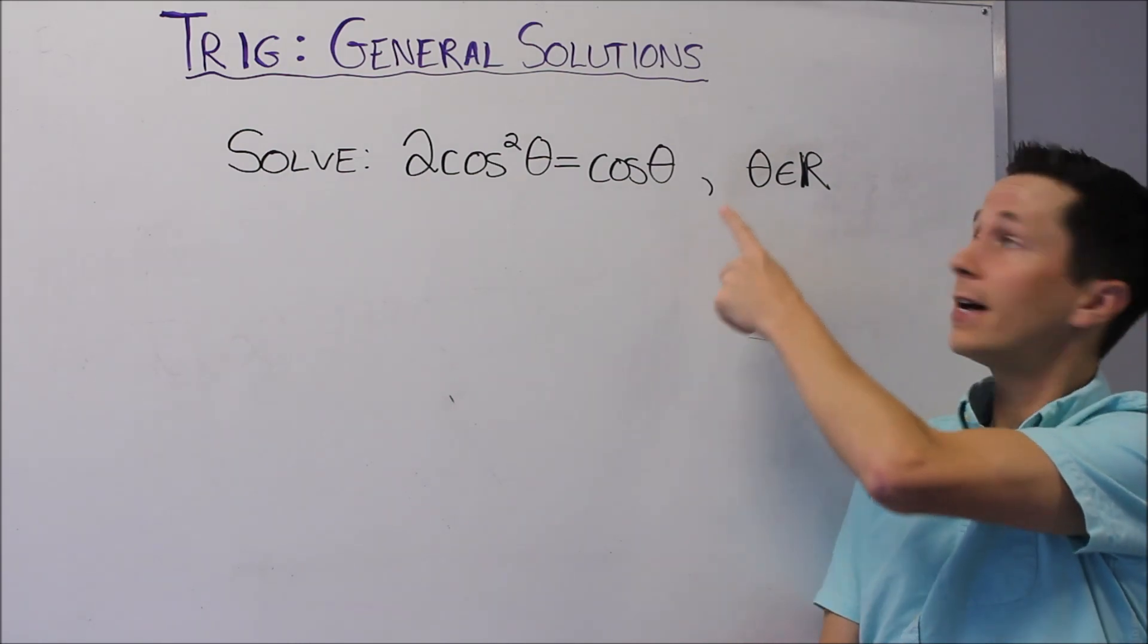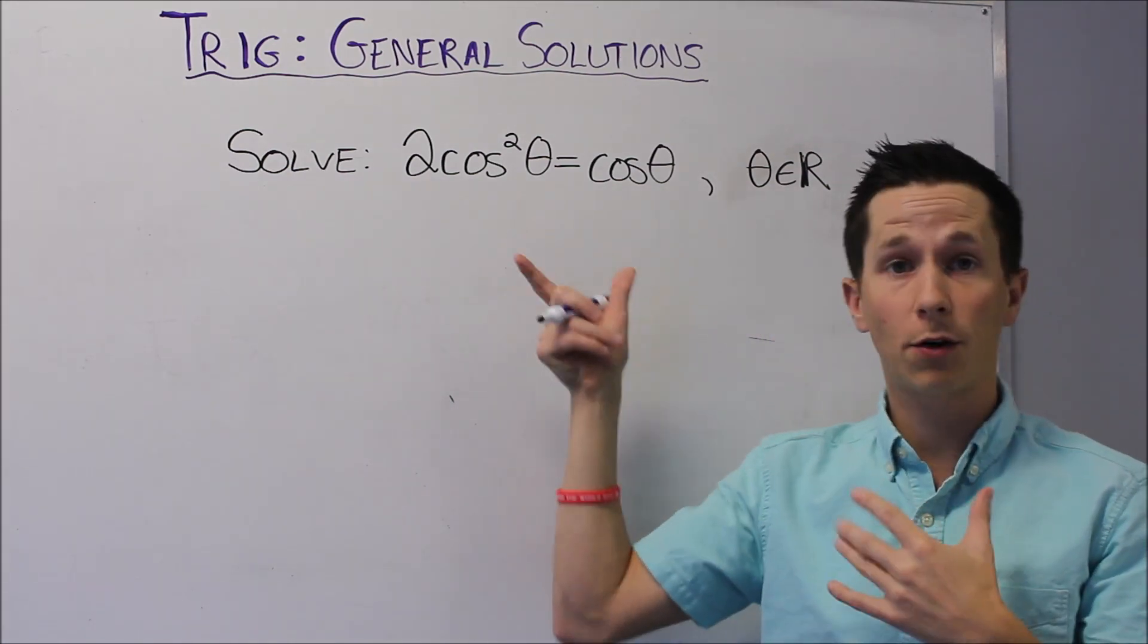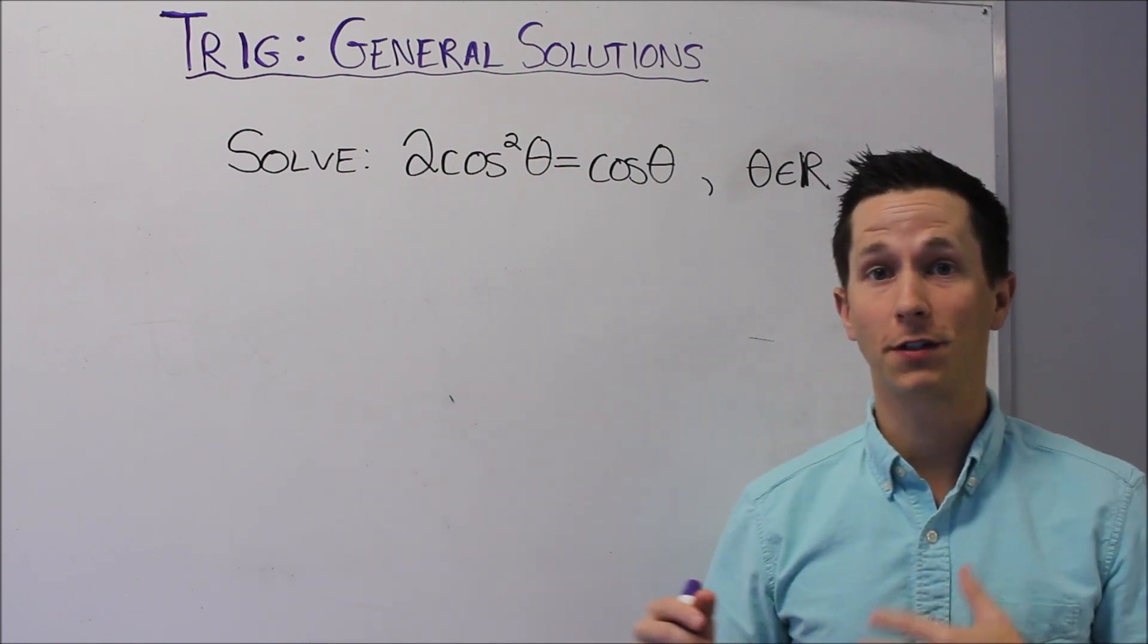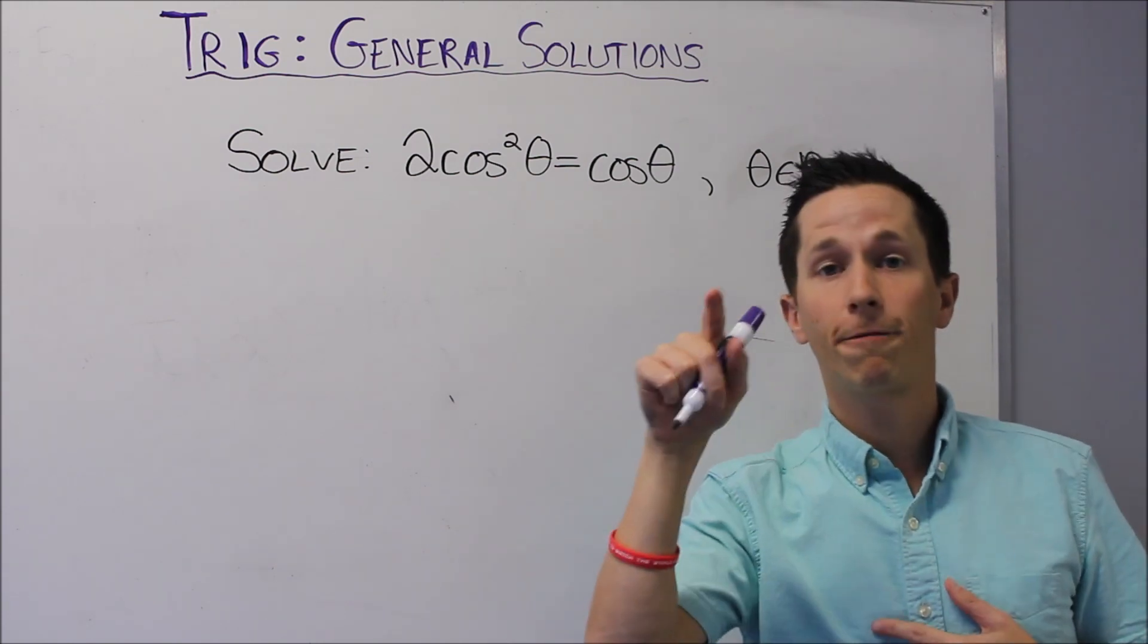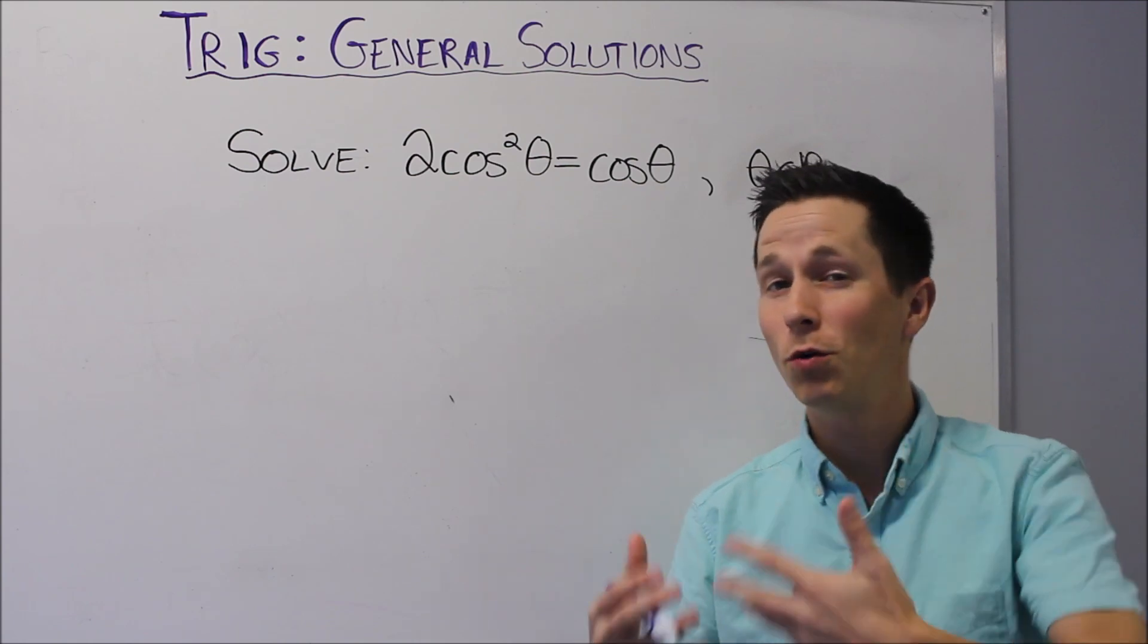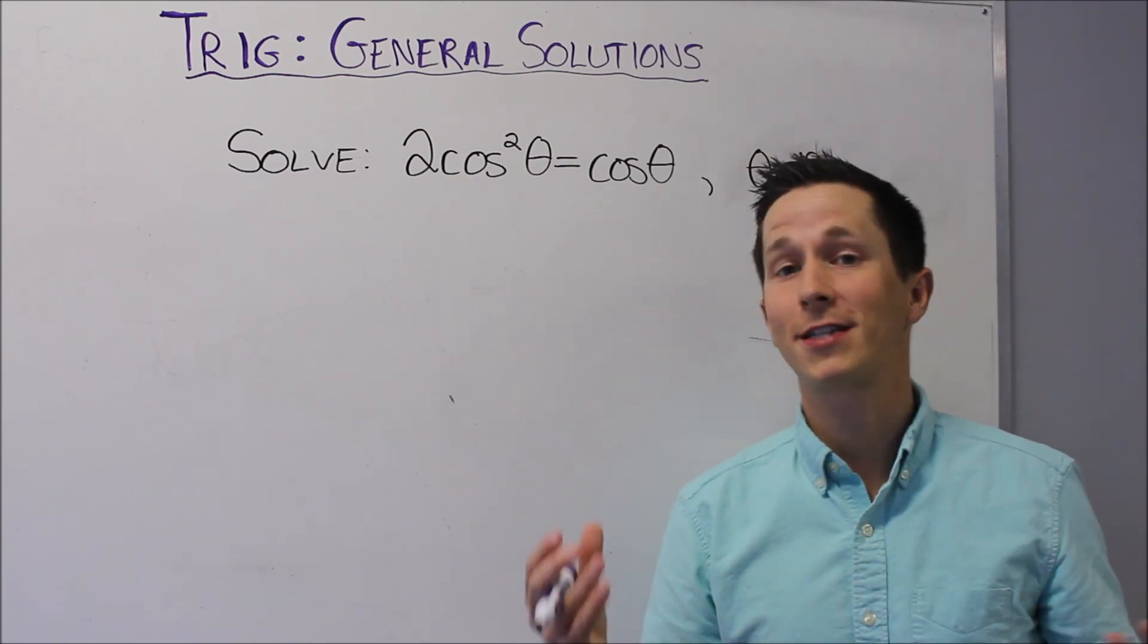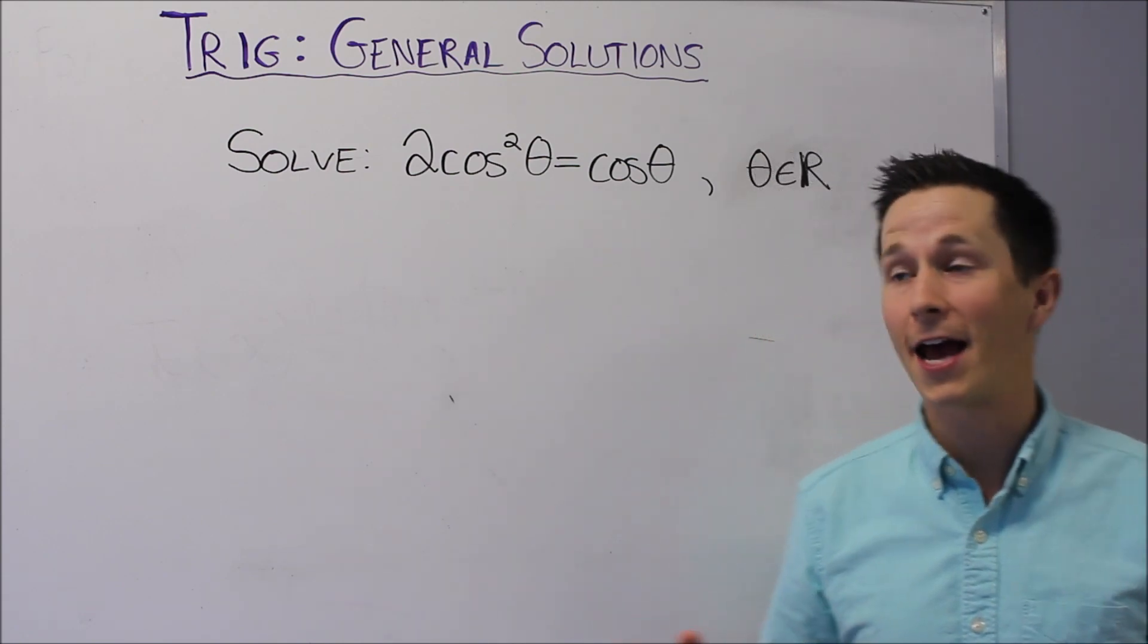In this case, it says theta is an element of the reals, which means the solution to this equation will have potentially infinite solutions. We know from the unit circle that coterminal angles, you go one full rotation around the unit circle, hit the same spot, and it's a new angle with the same terminal arm. So we need to come up with a general statement or general solution that covers all of those potential answers.